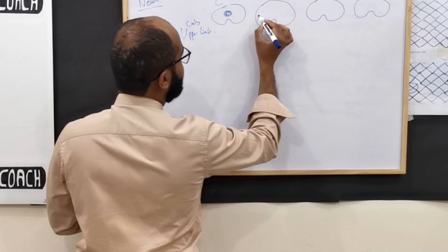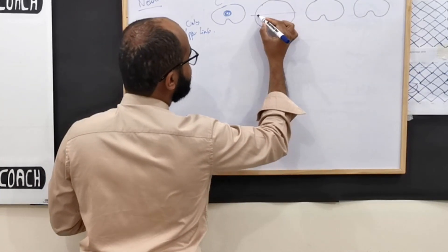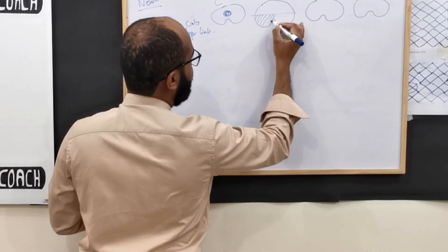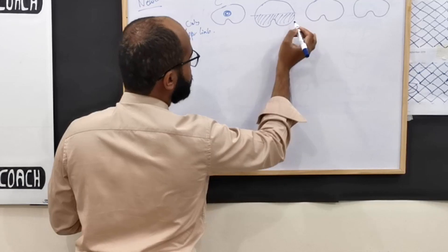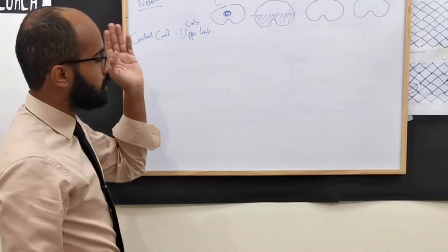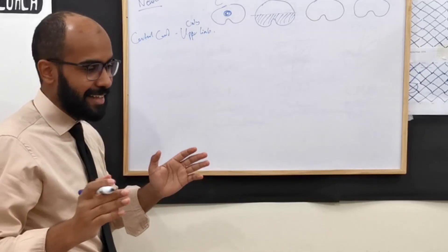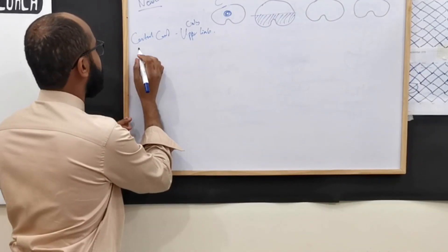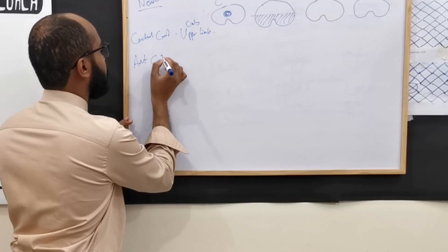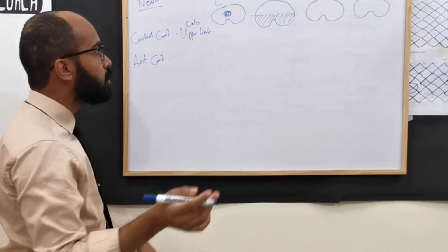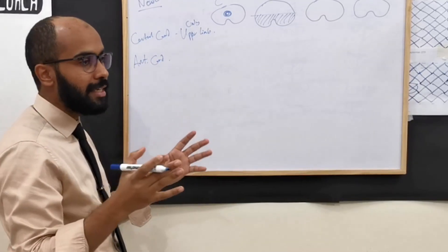Next is anterior cord, where the anterior half is affected. For anterior cord, to figure out that this is an anterior cord syndrome, what you're going to do, what you'll probably see is: